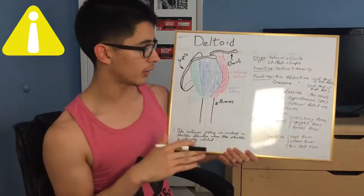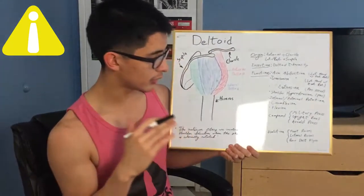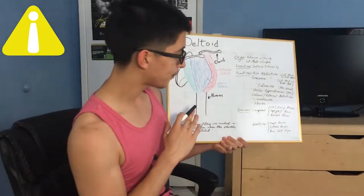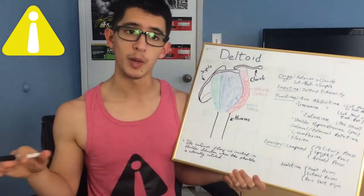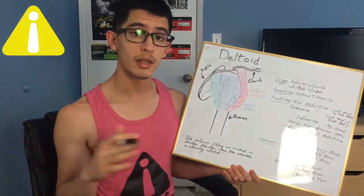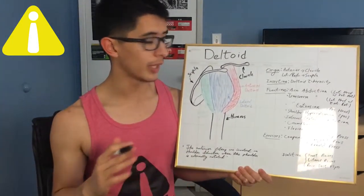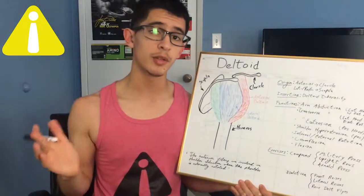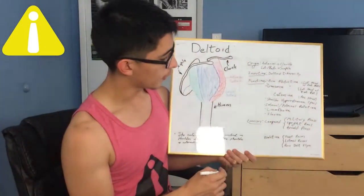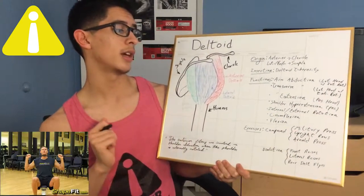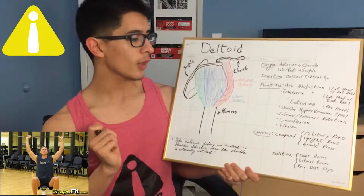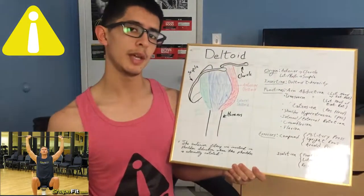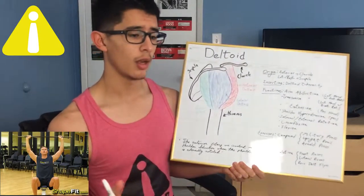Next we have the exercises. There are compound and isolation exercises, as with any other muscle group. For compound I have military press, upright rows, and Arnold presses. For isolation: front raises, lateral raises, and rear delt flies. For the isolation movements all you need is a pair of dumbbells, but machines or cables work just as well.